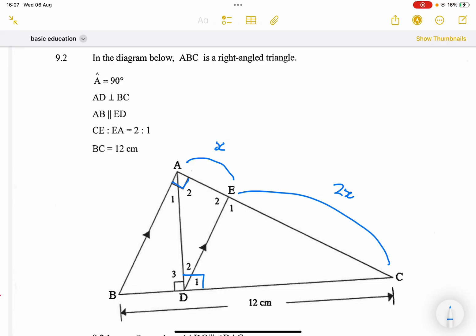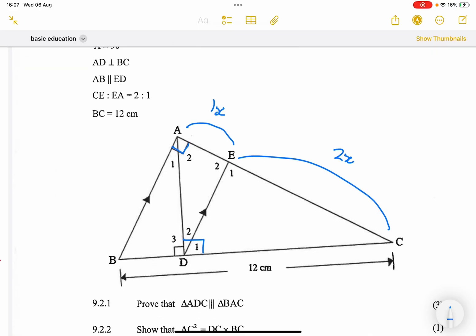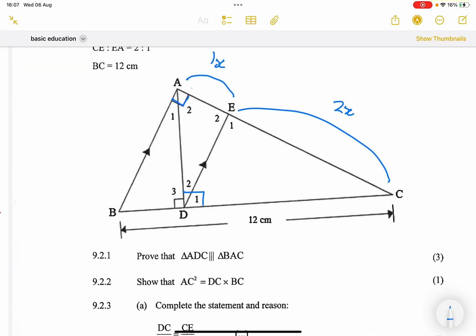Please always just put a variable to it so that you remember that's not the distance, but it is a ratio that is represented. So that's CE, that's 2x to 1x. And then they say BC is 12 centimeters. Now they say to us, we must prove that triangle ADC